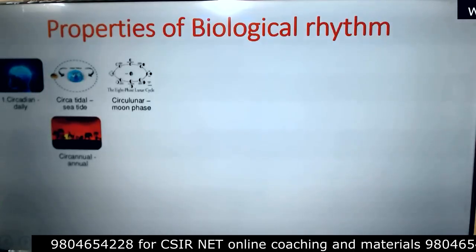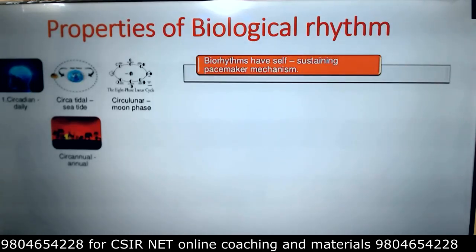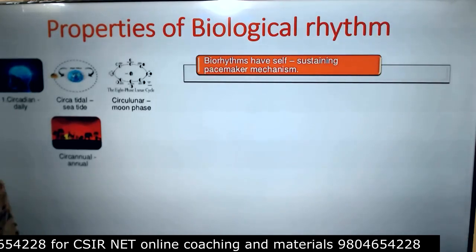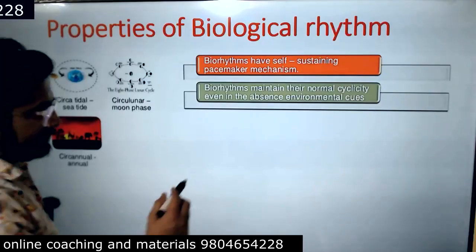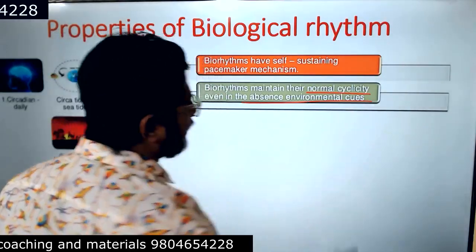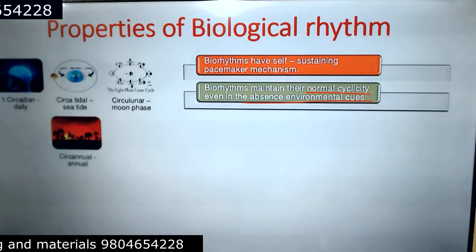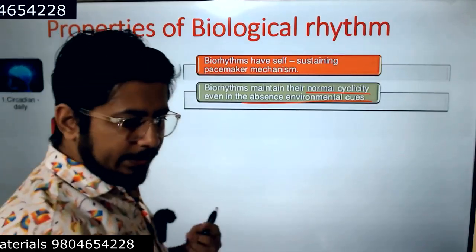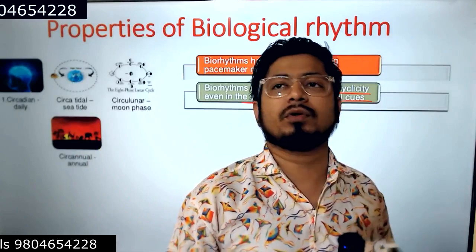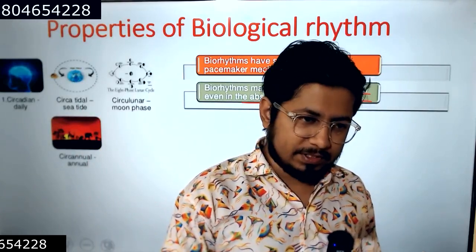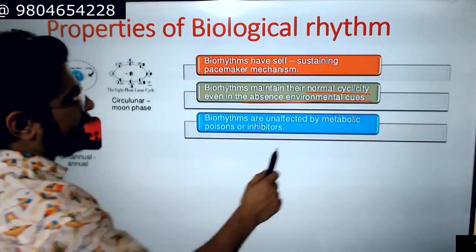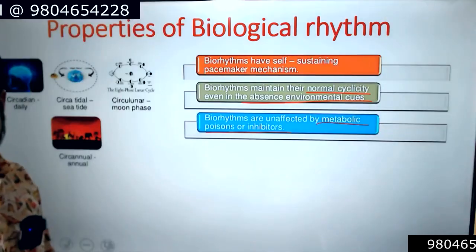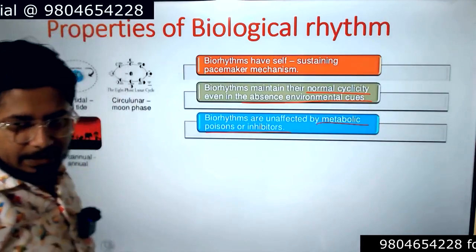What are the properties of biological rhythm? Biorhythms are self-sustaining pacemaker mechanisms — they don't need any external cues to continue; they are self-sustaining in nature. Biorhythms maintain their normal cyclicity even in the absence of environmental cues. Without the environmental cues, the rhythm continues. That's why our body clock normally prepares us for sleep even if you don't know whether it's morning or nighttime. Biorhythms are also unaffected by metabolic poisons or inhibitors.